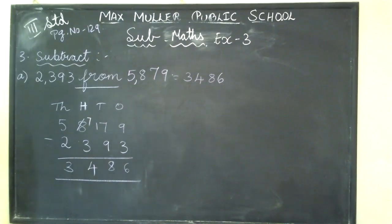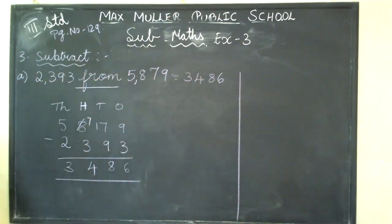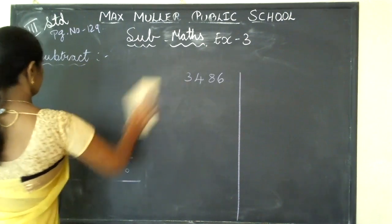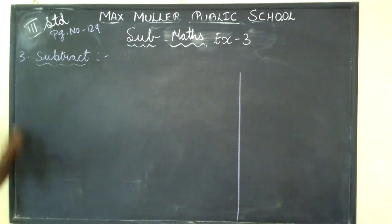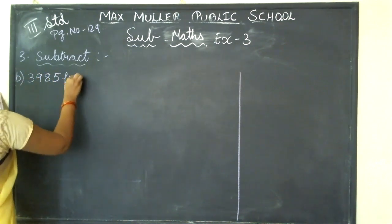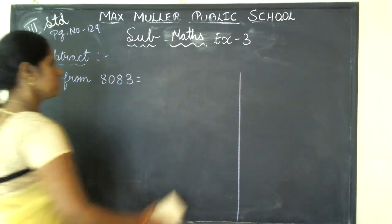Understood, all of you? Copy it on first. Next, the second one you see — finish it fast. Second one, you can pause and you can copy it on. Second one, you see — what they have given? 3,985 from 8,083. They have given. Yes or no? So, first how are you going to do?